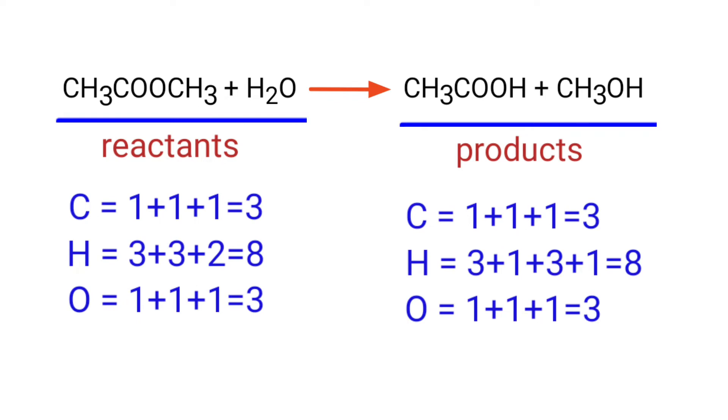If you look at this equation, the number of atoms at the reactants side are the same as the number of atoms at the products side. There are three carbon atoms, eight hydrogen atoms, and three oxygen atoms on both sides.